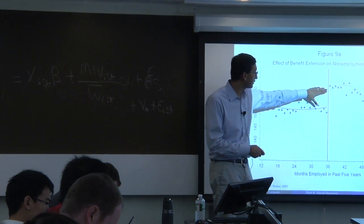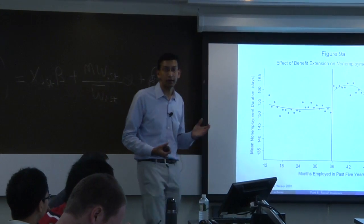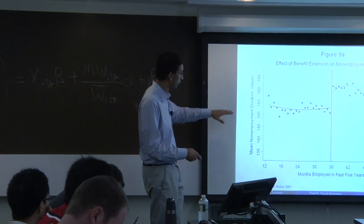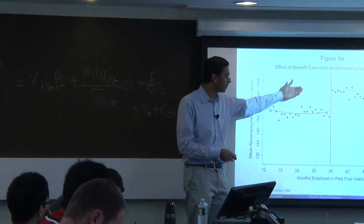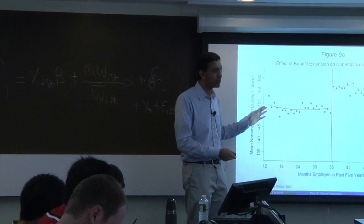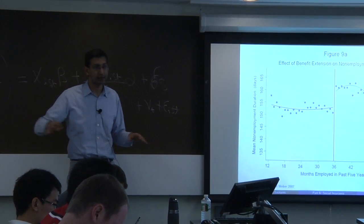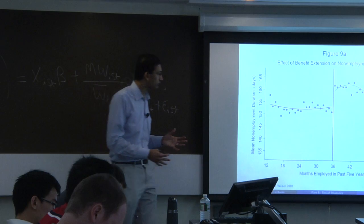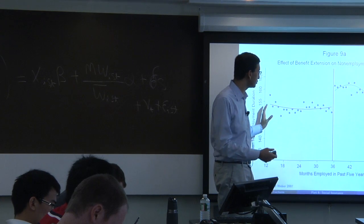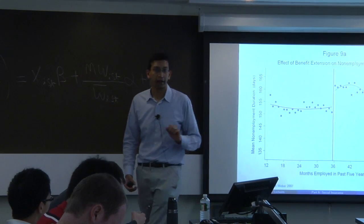How do we account for smooth trends away from the cutoff? In this particular case, we use a parametric approach with a cubic control function on the left and the right. You fit these models with an indicator for crossing the cutoff and then fit a relatively high-order polynomial on the left and right to account for smooth trends away from the cutoff. Another way to do it is with a local linear regression, narrowing the bandwidth around the cutoff.